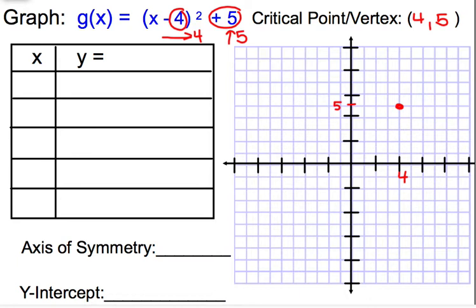So I'm going to go ahead and write that first point down, four and five. And my equation here in the blue is y equals the quantity of x minus four all squared plus five.